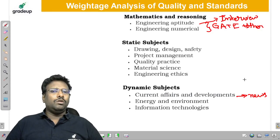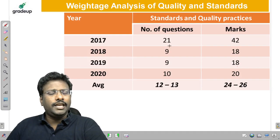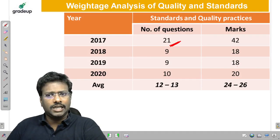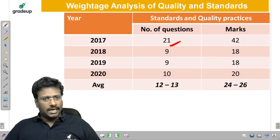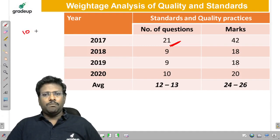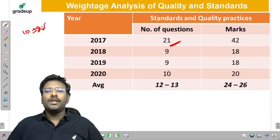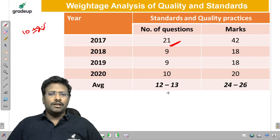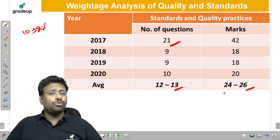In order to know the weightage of the subject, let us consider the data. In 2017, they gave a very huge number of questions from quality and standards — 21 questions, equal to 42 marks. In 2018-19, we got 9 questions in quality and standards. In 2020, we got 10 questions from it. Each and every time except 2017, we are having 10 plus or minus 1. On an average, we are going to get 10 to 12 questions and the average weightage is going to be 24 to 26 marks.